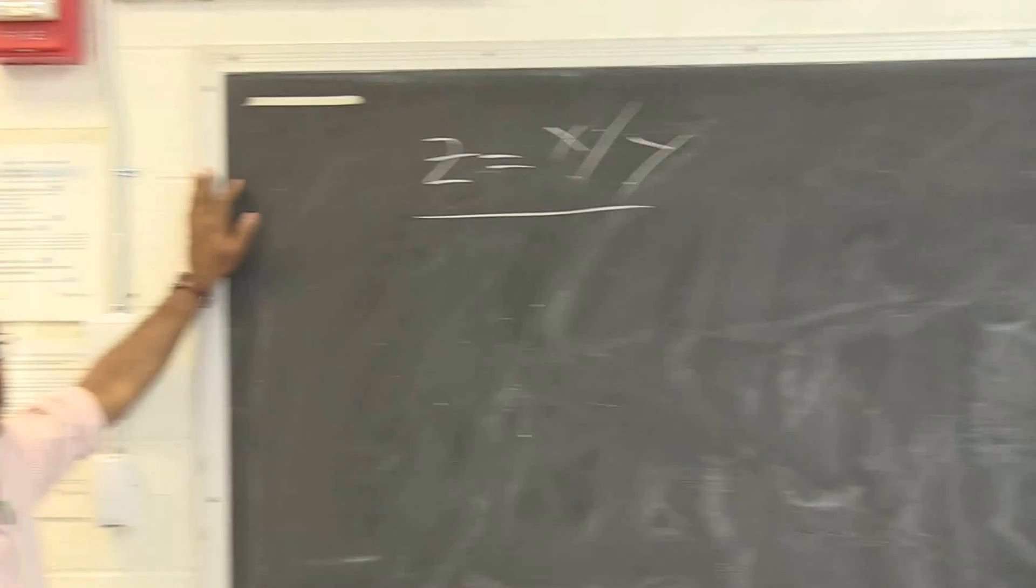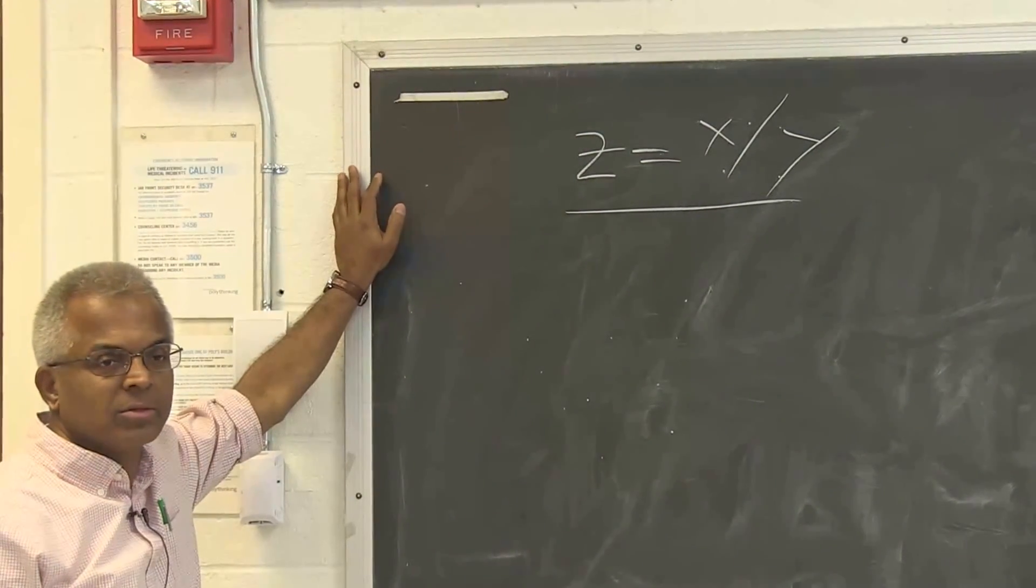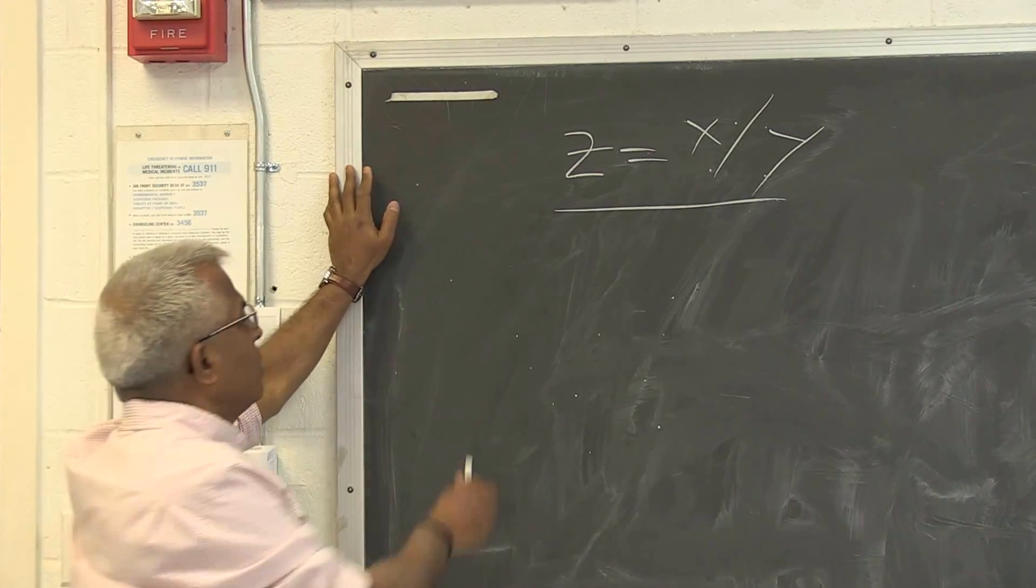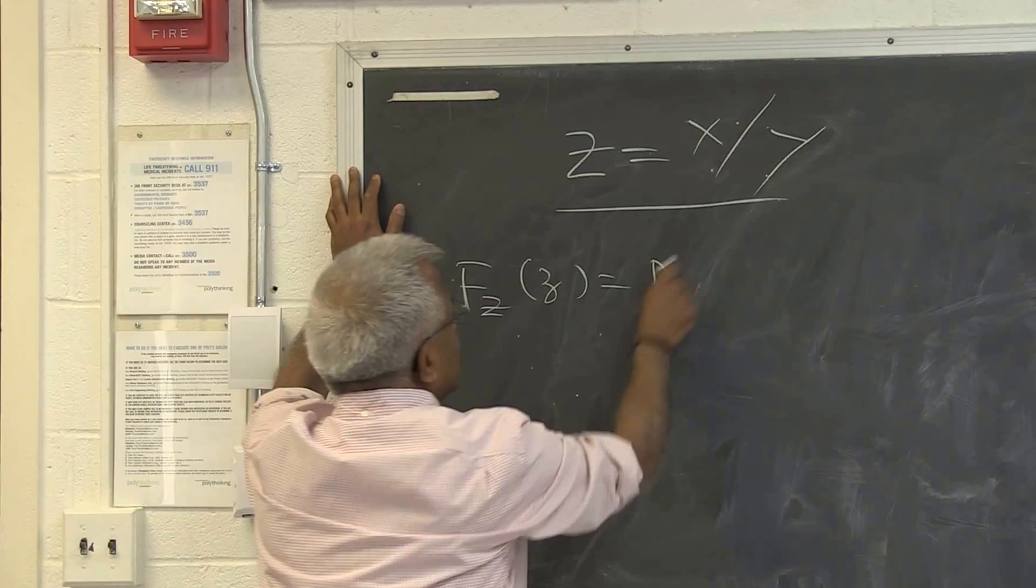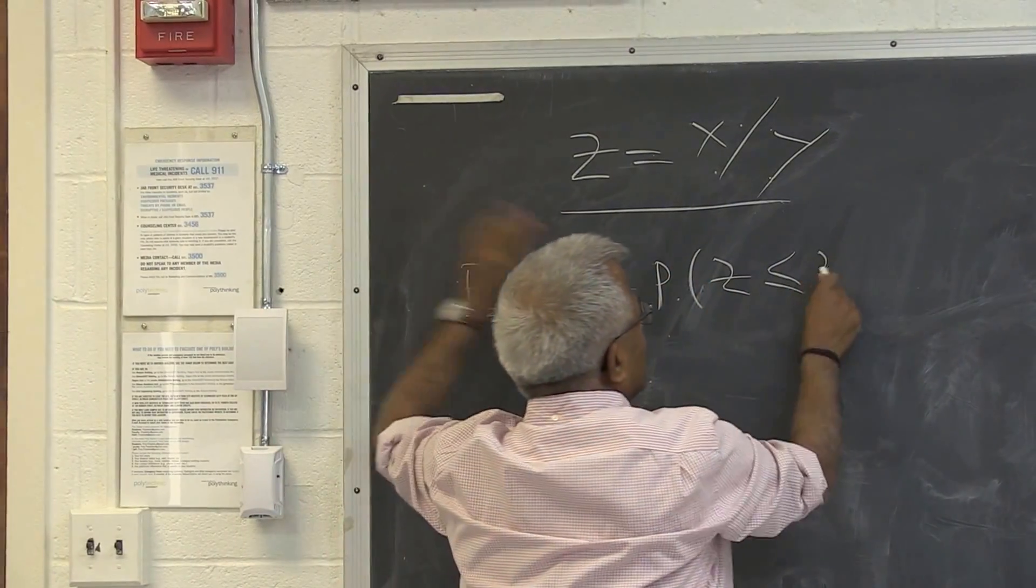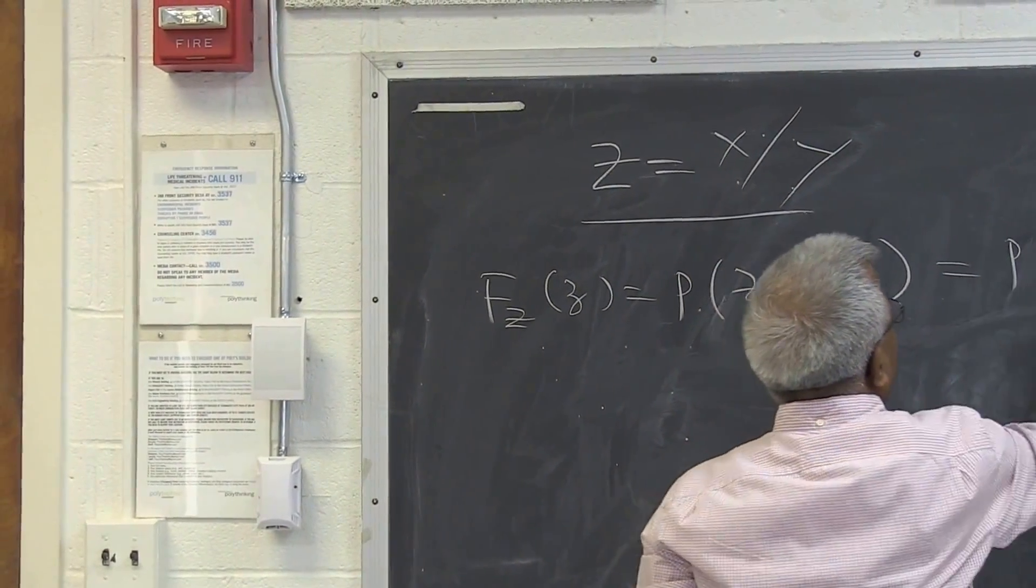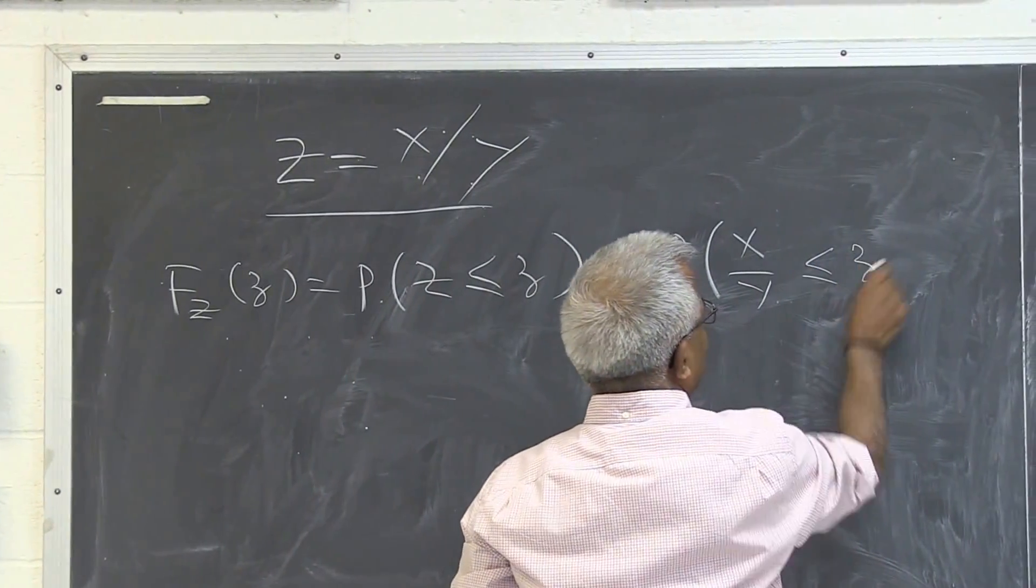The problem is z equal to the ratio of two random variables. Again, a classic problem. So we start with the distribution function of z, which is z less than or equal to z. But z is given to be probability of x over y is less than or equal to z.